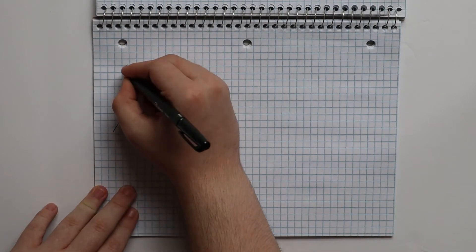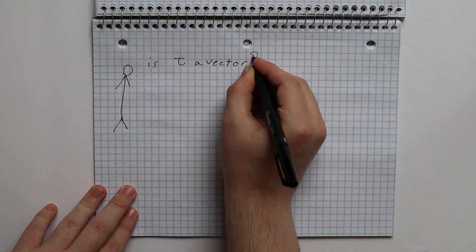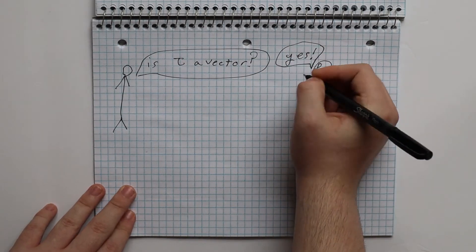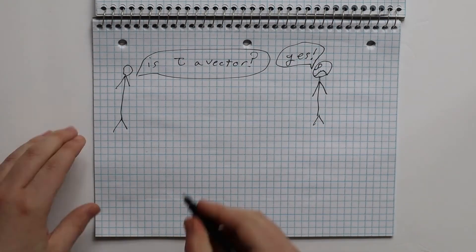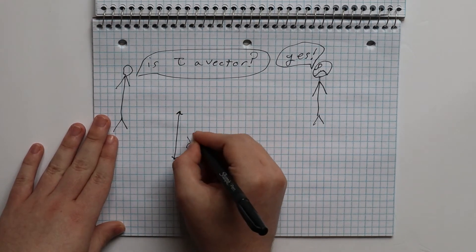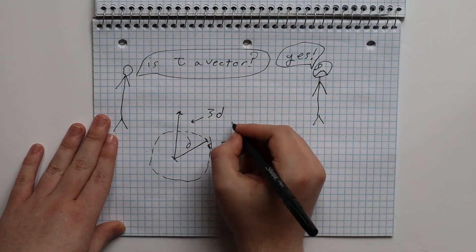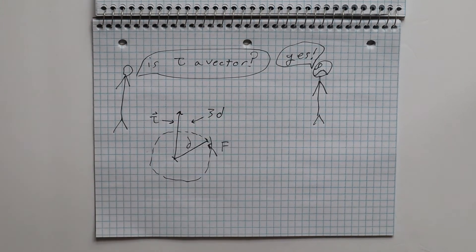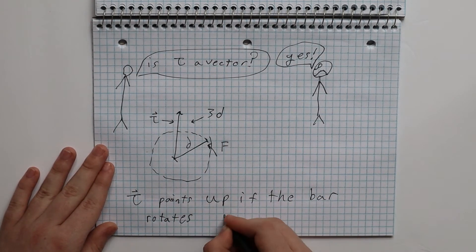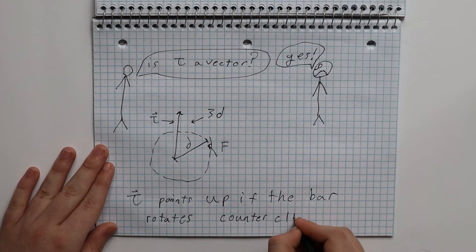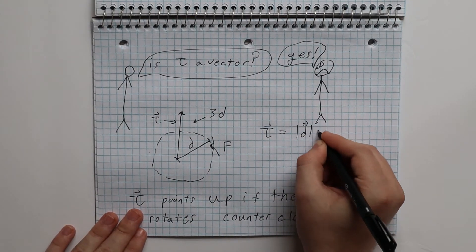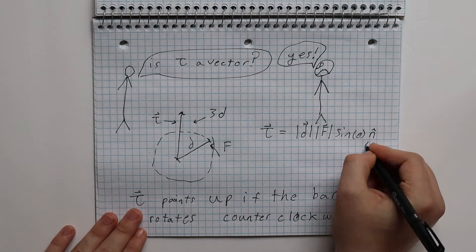Now is torque a vector? Actually, yes. The direction of torque is just the axis of rotation in 3D, which is perpendicular to both our force and our displacement. And so our formula is actually torque equals the magnitude of our displacement times the magnitude of our force times sine of theta times n-hat, where n-hat is just the unit vector perpendicular to both our displacement and our force.